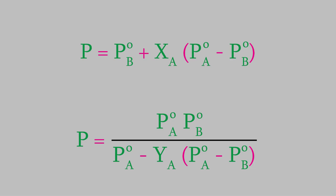One equation ties the pressure to the mole fraction of A in the liquid, and one ties P to the mole fraction of A in the vapor. The most important thing about these two equations is that the mole fraction is the only variable on the right sides. Everything else is the vapor pressure of a pure sample of either A or B, which is a constant at any particular temperature.